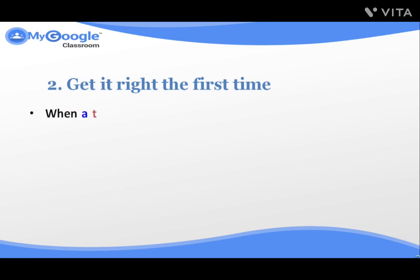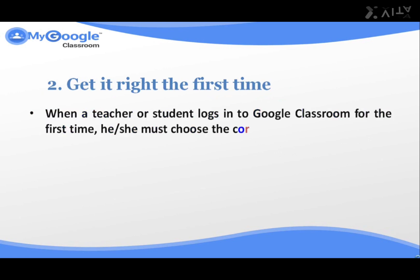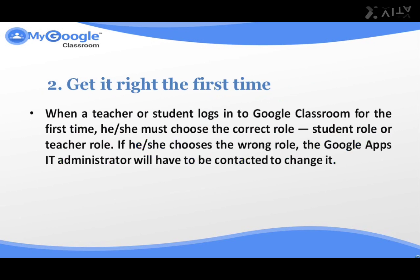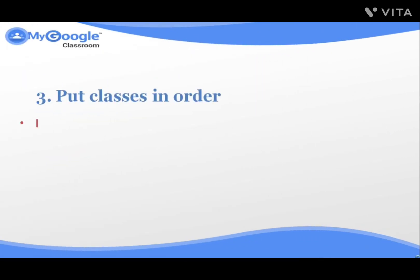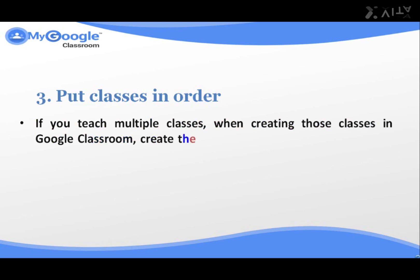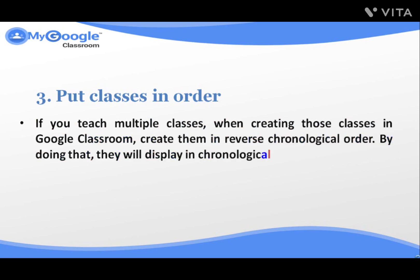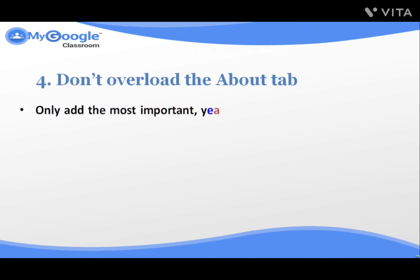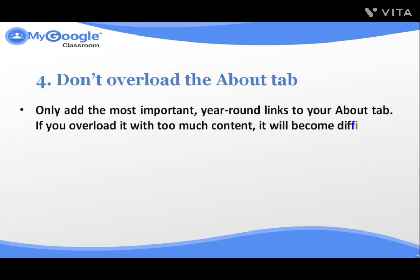Number two: Get it right the first time. When a teacher or student logs into Google Classroom for the first time, they must choose the correct role — student role or teacher role. If the wrong role is chosen, the Google Apps IT administrator will have to be contacted to change it. Number three: Put classes in order. If you teach multiple classes, when creating those classes in Google Classroom, create them in reverse chronological order — by doing that, they will display in chronological order in Classroom. Number four: Don't overload the About tab. Only add the most important year-round links to your About tab. If you overload it with too much content, it will become difficult to find anything there.